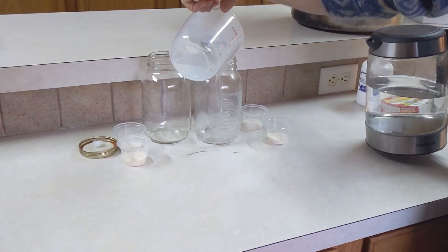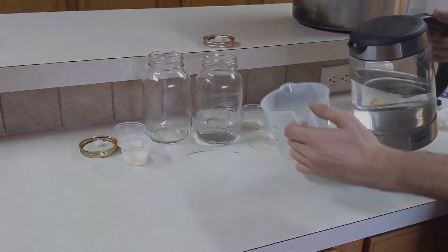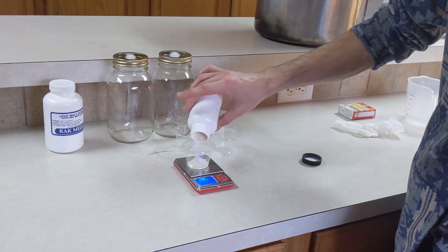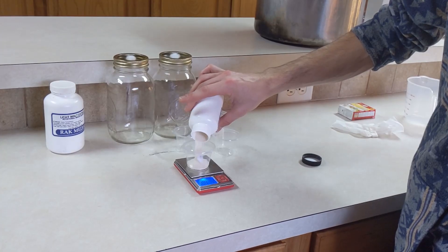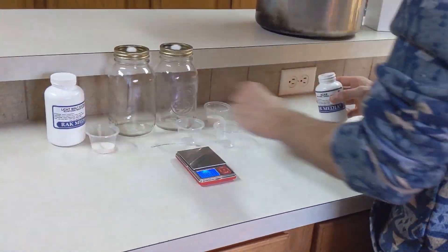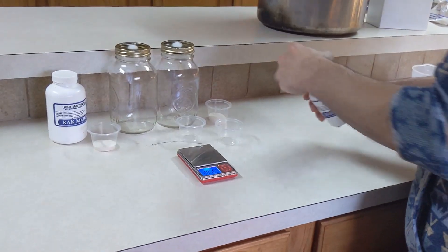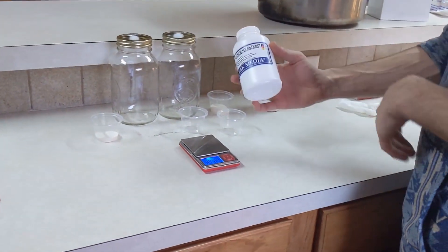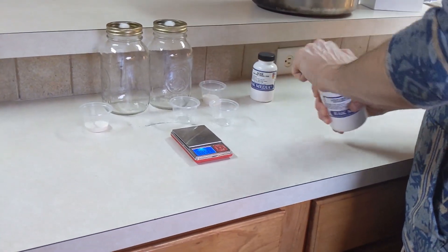You're going to need also agar powder and you're also going to need some light malt extract. I like to pre-weigh everything that way it's just much easier to mix. The recipe I'm using here is calling for 15 grams of the light malt extract and 10 grams of the agar agar powder.